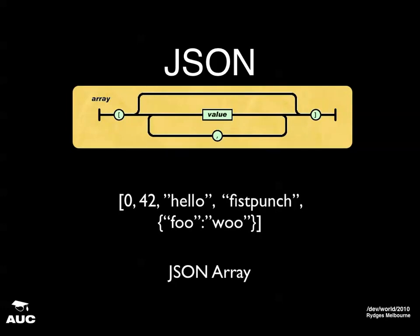An array is basically just a bunch of values separated by commas and put together with square brackets. One of the values can itself be an object. The JSON that comes down in the public Twitter stream is actually a big long array of 20 of these object-style things — with lots of information in it. Most of the information we don't even care about. In fact, the only information I care about in this demo is the actual tweet itself.